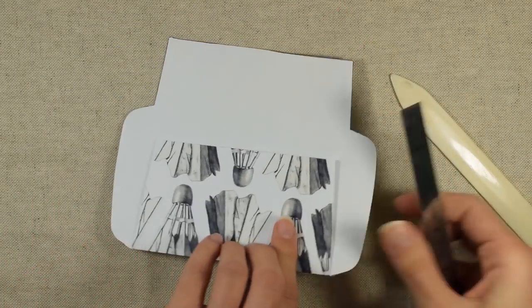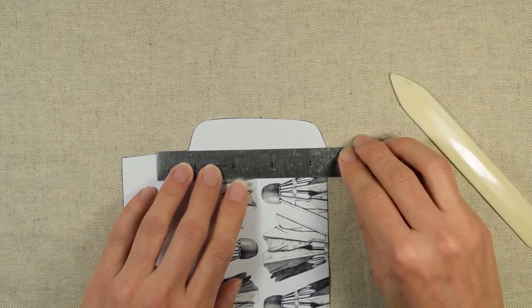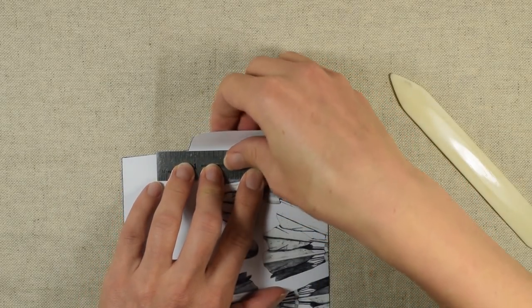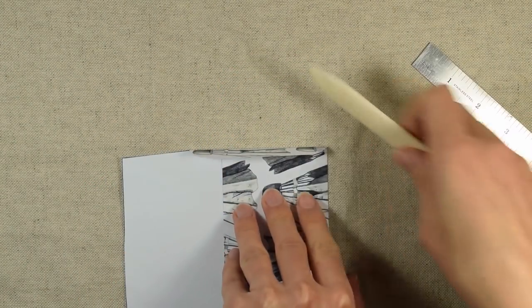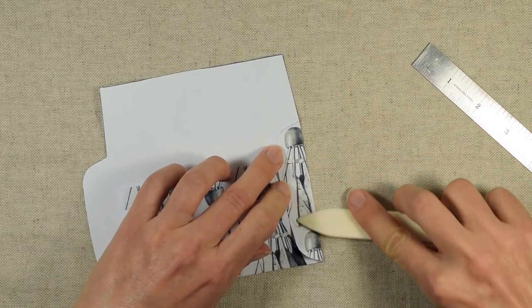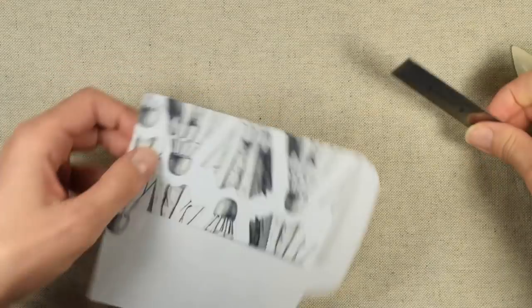Then do that with the two side flaps. So line up the side flaps with this ruler, fold over. Use the bone folder. And then it's the same thing on the other side.